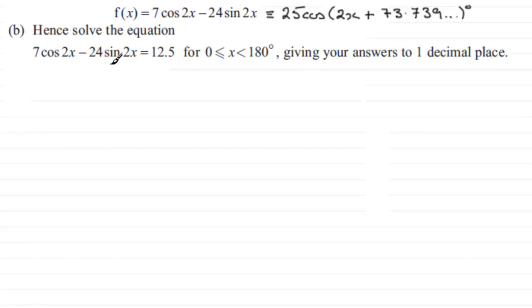What I would want to do is replace the left hand side here with what we've got up here. So I'm going to say that therefore we've got 25 cosine of 2x plus 73.739 and so on degrees, well that equals 12.5.